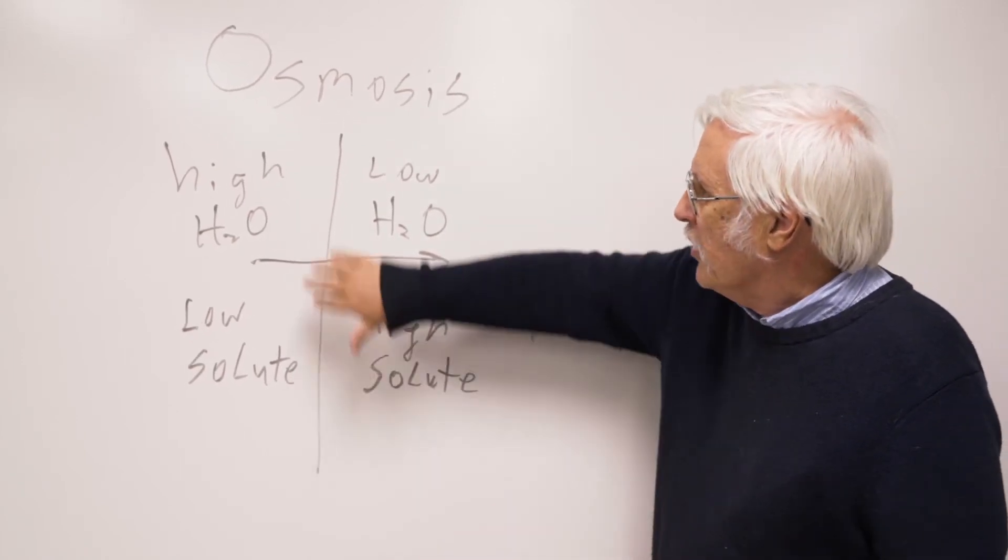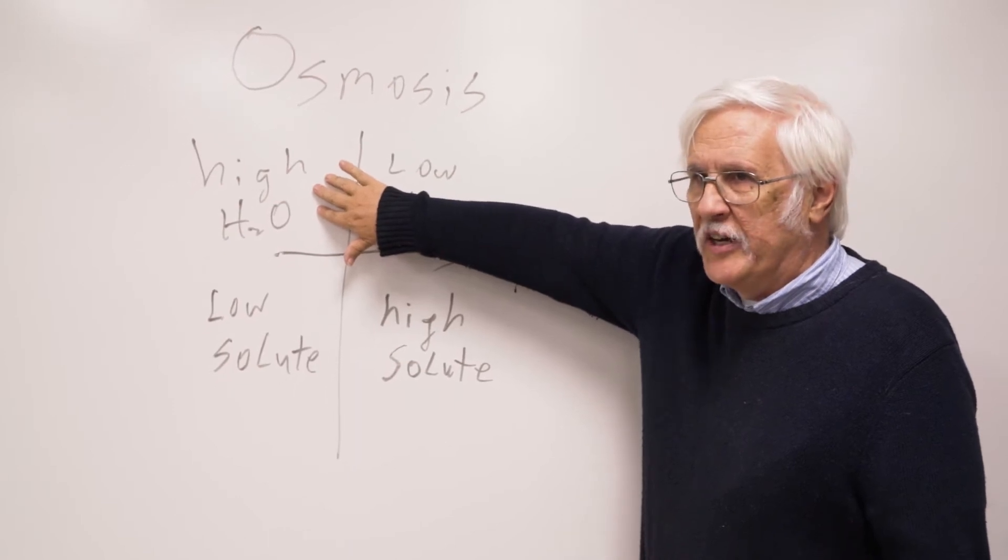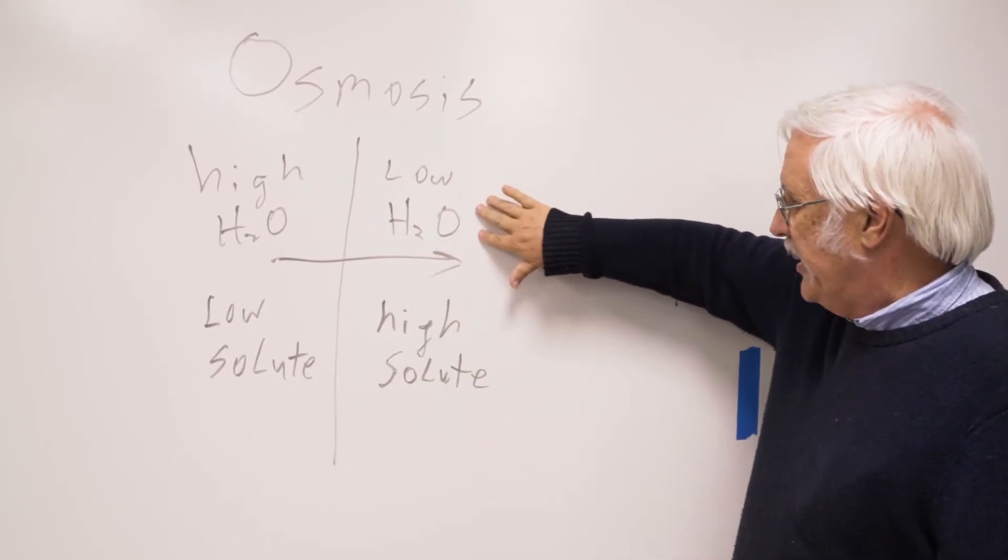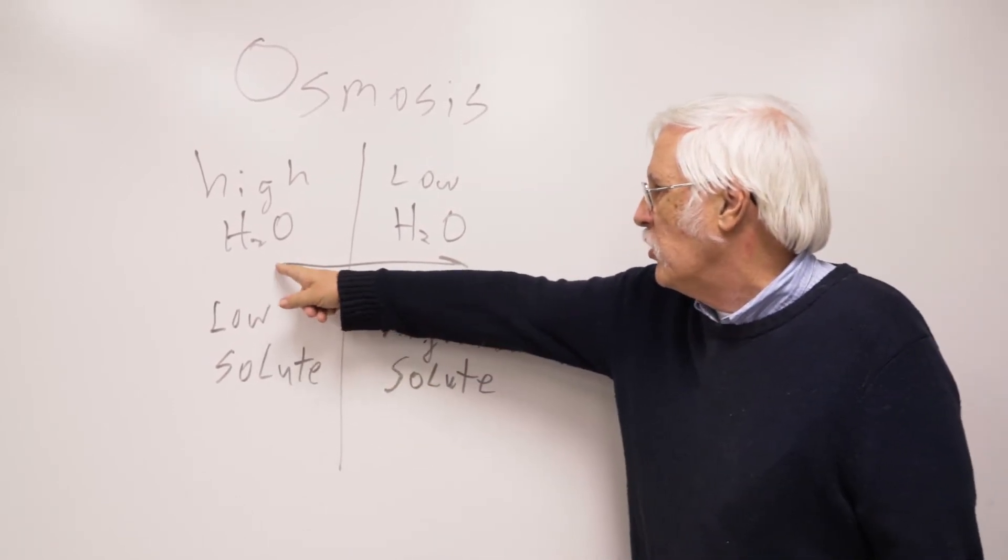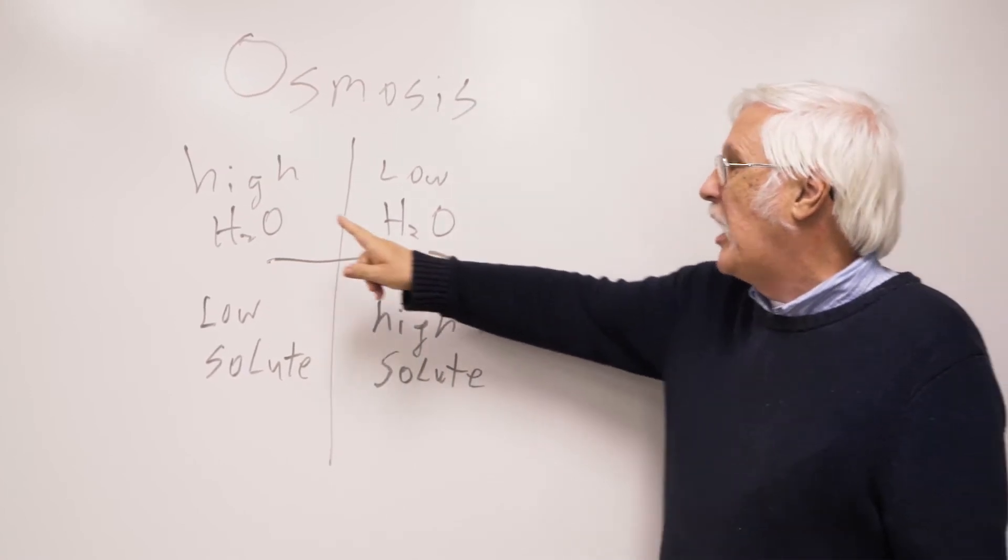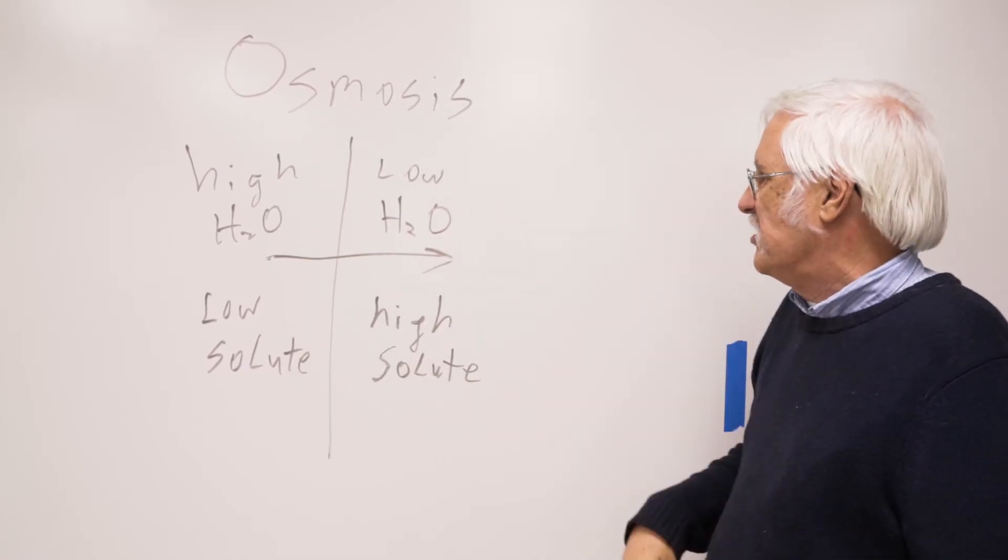If the concentration of water on one side of the membrane is high and the other side is low, water will go through the membrane from the high water side to the low water side.